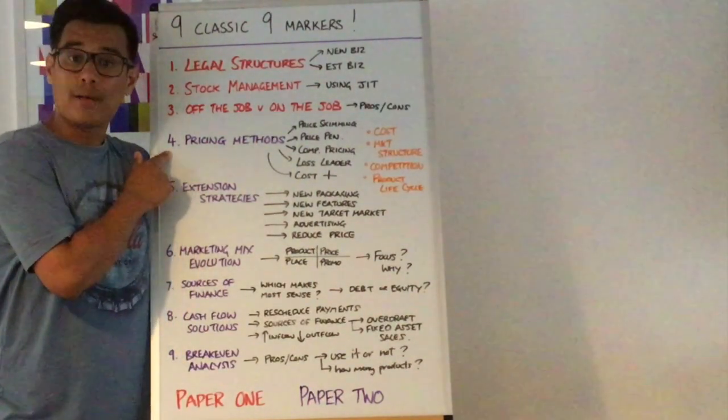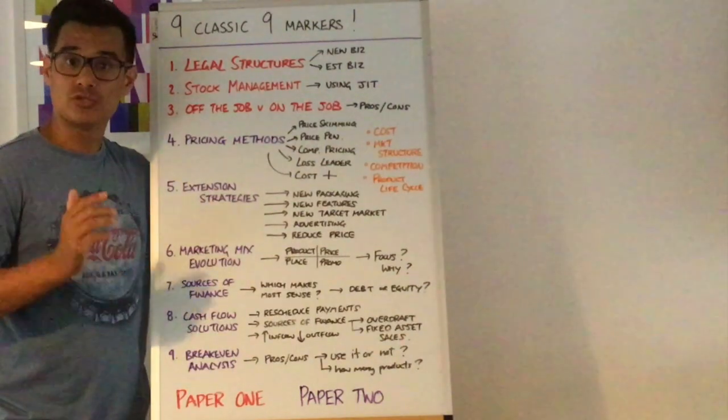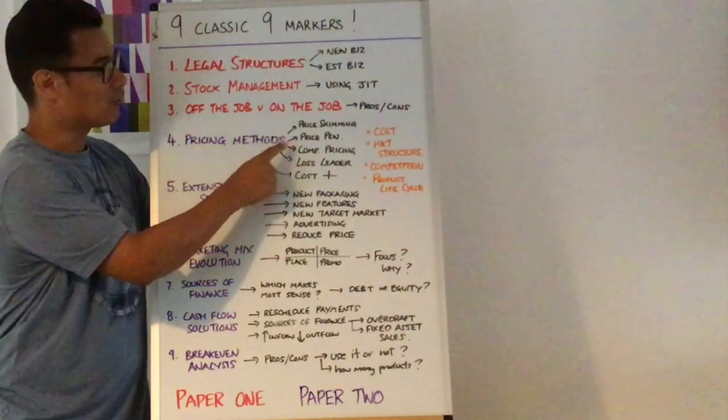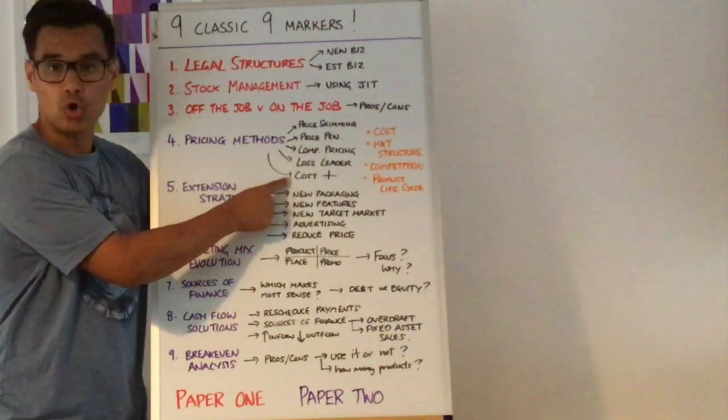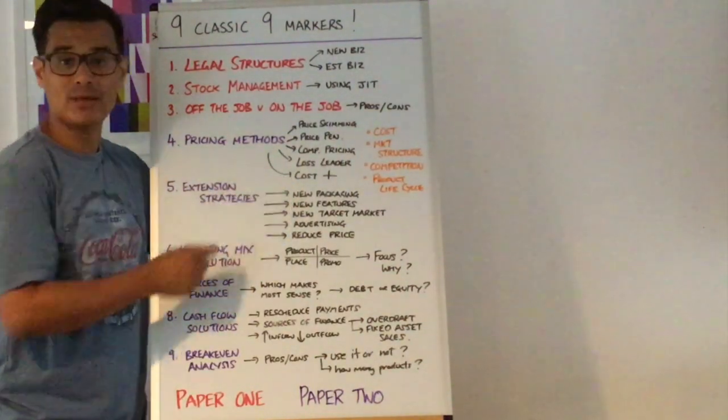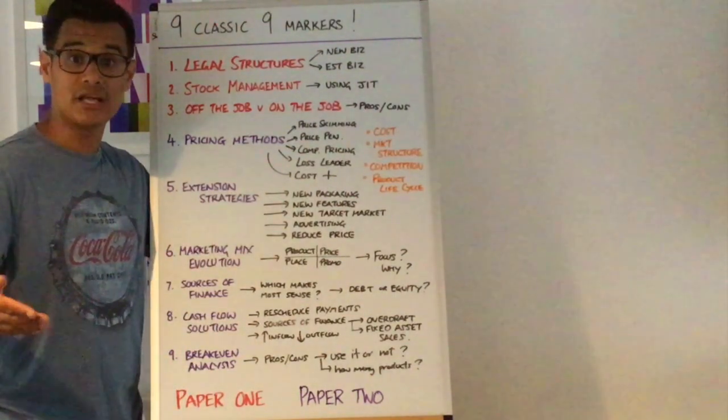Number four, so looking at paper two, pricing methods is a real you got to learn this, really likely will come up. Pricing methods you're thinking price skimming, price penetration, competitive pricing, loss leader pricing or cost plus pricing.